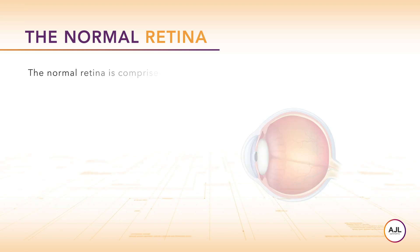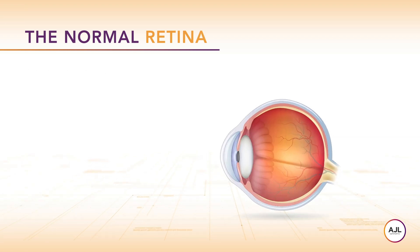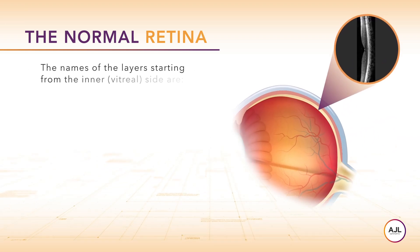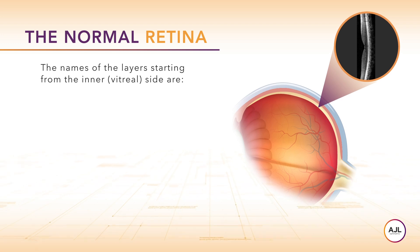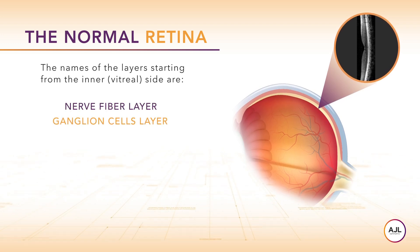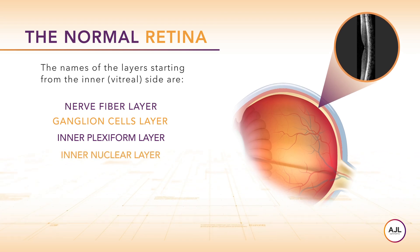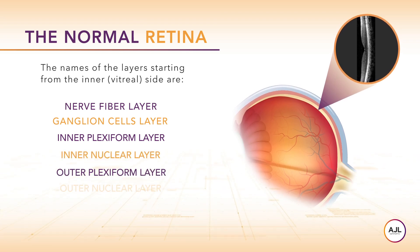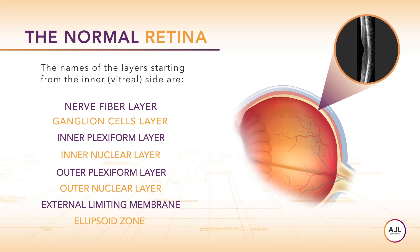The normal retina is comprised of layers. The names of the layers, starting from the inner vitreous side, are: nerve fiber layer, ganglion cells layer, inner plexiform layer, inner nuclear layer, outer plexiform layer, outer nuclear layer, external limiting membrane, and ellipsoid zone.